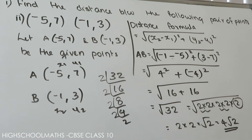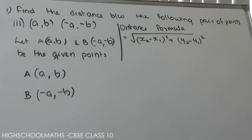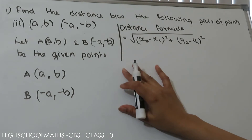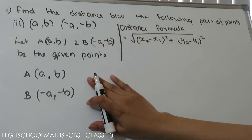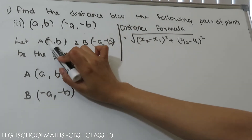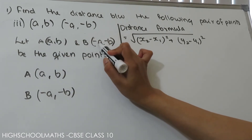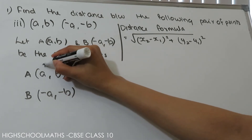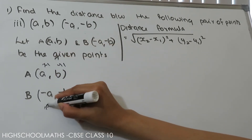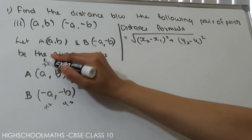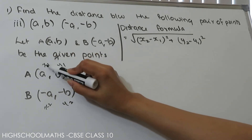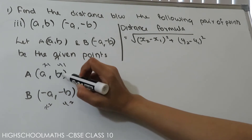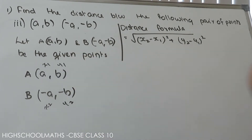For the third part, the points are (a, b) and (minus a, minus b). Let A be (a, b) and B be (minus a, minus b). We assign x1 equals a, y1 equals b, x2 equals minus a, y2 equals minus b. These are the given points. Let us apply the distance formula.